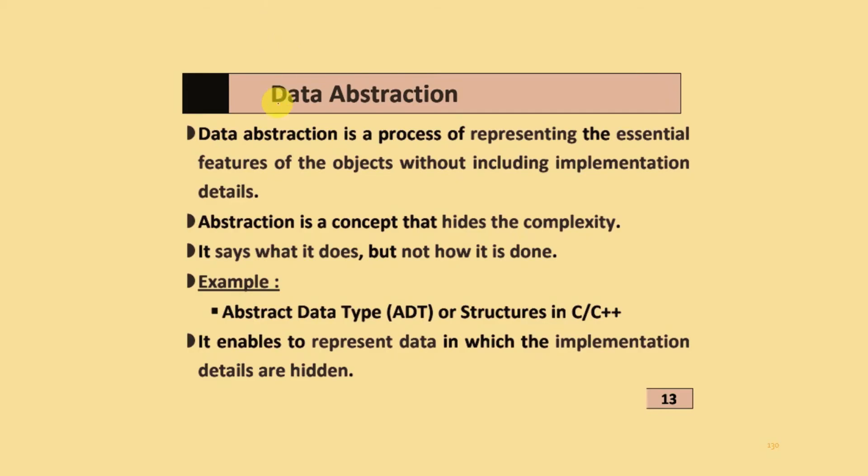Next one is data abstraction. Data abstraction is the process of representing the essential features of objects without including implementation details. Abstraction is a concept that hides the complexity. It says what it does, but not how it is done. Examples are Abstract Data Type (ADT) or structures in C or C++. It enables representation of data in which implementation details are hidden.